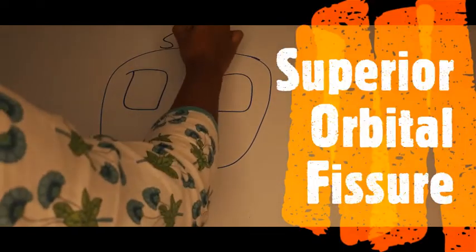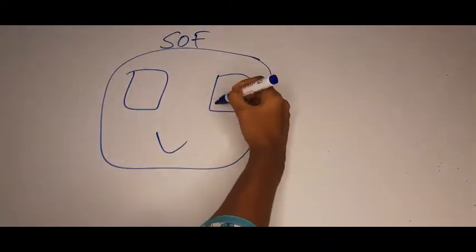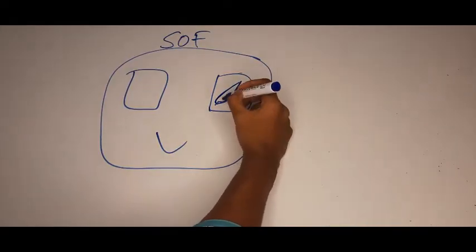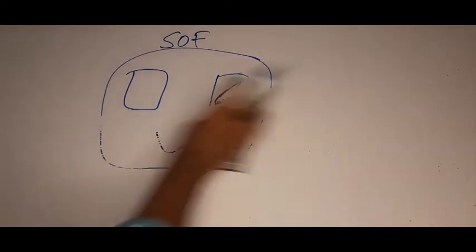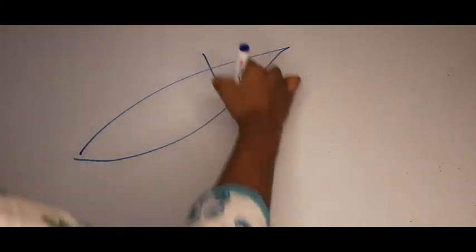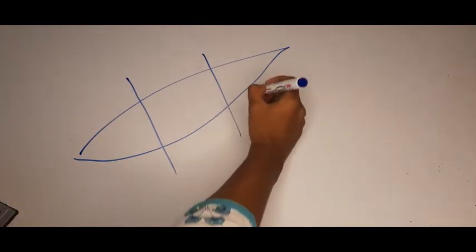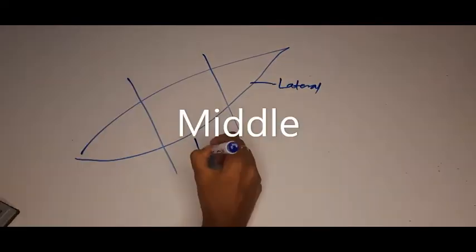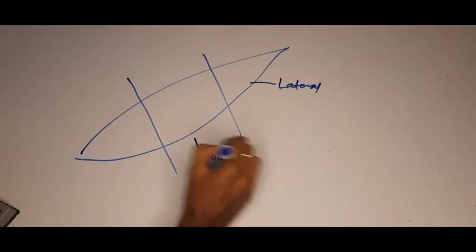Next is the superior orbital fissure. This is a small fissure in the orbit. This is the orbit. This is a fissure in the orbit. And we are going to zoom in to this fissure. We are dividing it into three parts. So this becomes the lateral. This is the middle. And this is the medial.